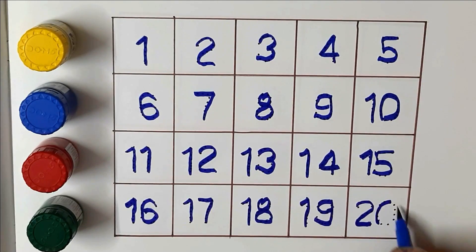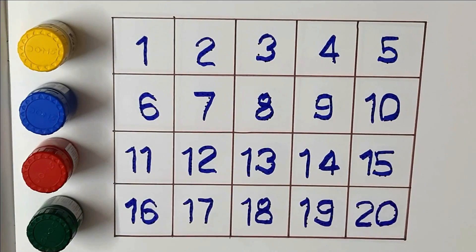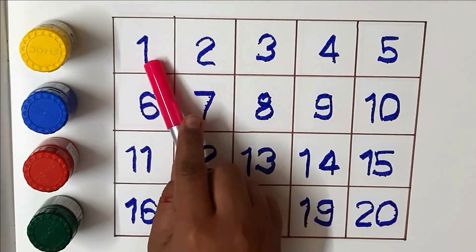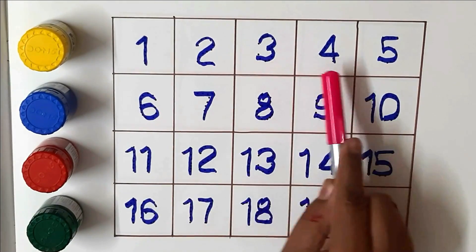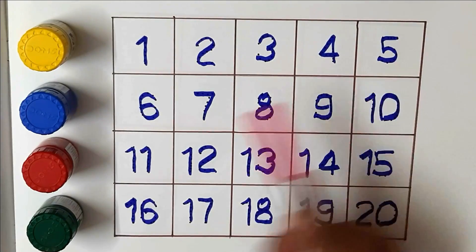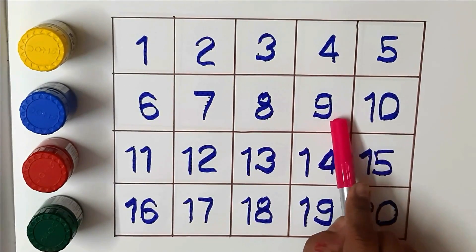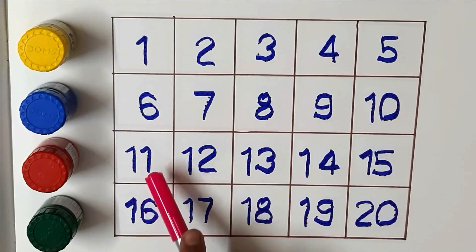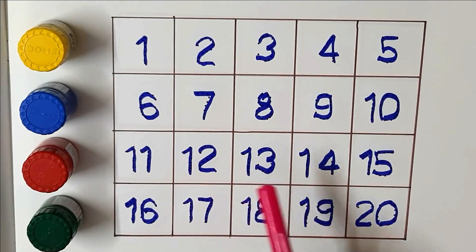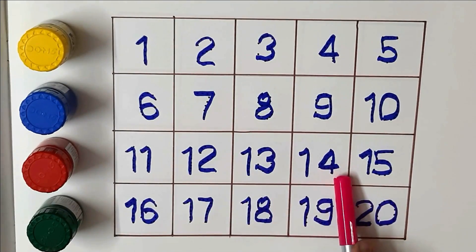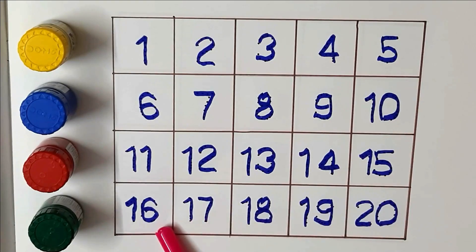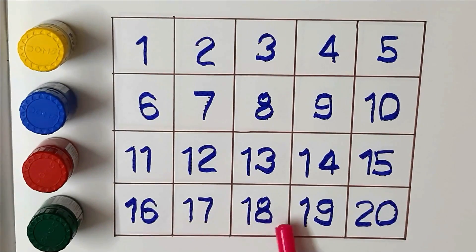One, two, three, four, five, six, seven, eight, nine, ten, eleven, twelve, thirteen, fourteen, fifteen, sixteen, seventeen, eighteen, nineteen, twenty.